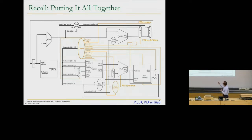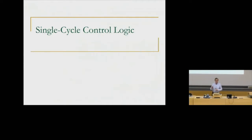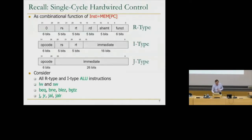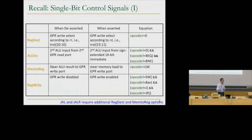These control signals and data path elements are not visible to the programmer — not all of them at least; memory and PC are clearly visible. We designed the data path, added the control signals, and for your machine to work you need to have both the data path and the control logic. We were talking about hardwired control — single-cycle hardwired control. Essentially we decode the instruction to generate the control signals. We have eight different control signals — four here and four in this slide.